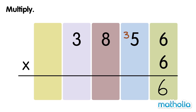Now multiply the 10s. 6 times 5 tens equals 30 tens. 30 tens plus 3 tens equals 33 tens. Regroup 33 tens into 3 hundreds and 3 tens.